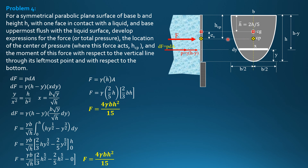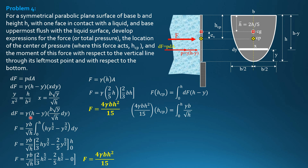How about h sub cp? If you do not know the location of the centroid, then you do not know the location of the center of pressure either. So assuming you do not know, we apply integration by Varignon's theorem: F times h sub cp, the moment about the top, equals the integral of dF times (h minus y). So F times h sub cp equals the integral of dF times (h minus y), where dF is gamma b over square root of h times (h minus y) times square root of y dY, and the moment arm is (h minus y).